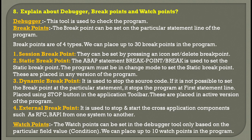Explain about debugger, breakpoints, and watch points. The debugger is a tool used to check the program — to see if something is wrong or if your code is being properly executed. A breakpoint can be set on a particular statement of any program. We can apply up to 30 breakpoints in a program. The four types of breakpoints are: session breakpoint, static, dynamic, and external breakpoint. A session breakpoint can be set by pressing the 'Set/Delete Breakpoint' icon.